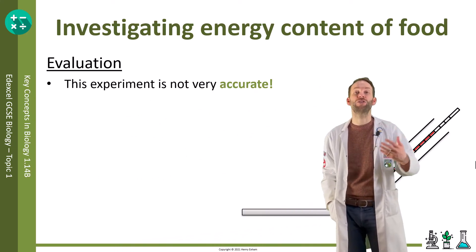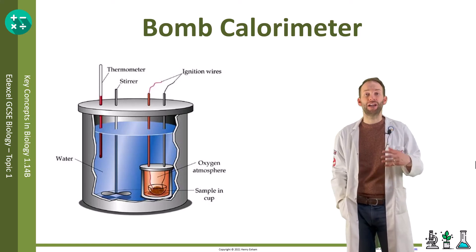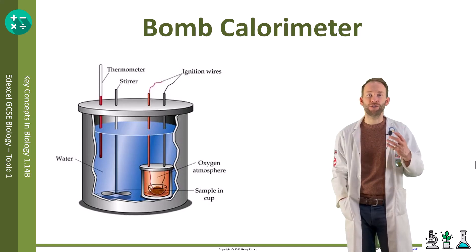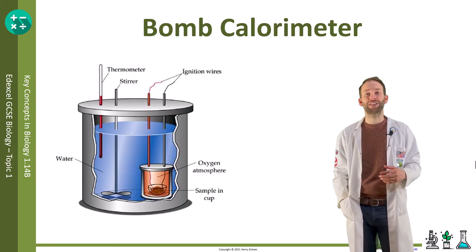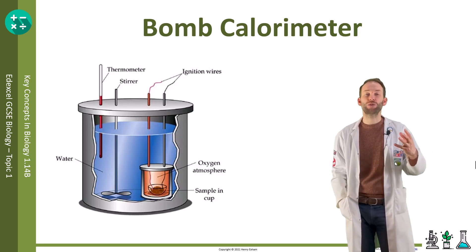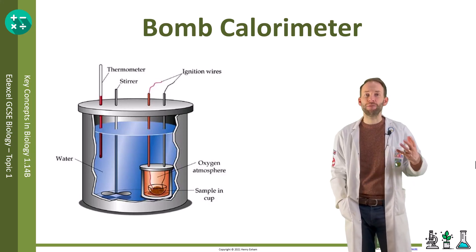There are many reasons why we're losing energy and not collecting it all in that test tube, so it's not a very accurate result. We can improve the apparatus by using something called a bomb calorimeter, which gives much more accurate results. The food is surrounded entirely by water so heat can't be lost to the surroundings, the water gets stirred to evenly distribute the heat, the food is ignited via wires rather than a Bunsen burner, and it's burnt in oxygen to get more complete combustion.